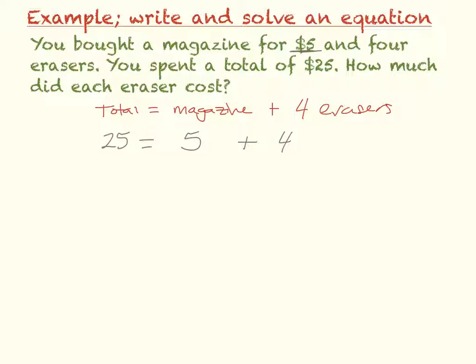plus the four erasers cost you, well, we don't know. That's the whole point. We want to know how much the erasers cost you, so four E. So, that makes your equation twenty-five equals five, plus four times E.